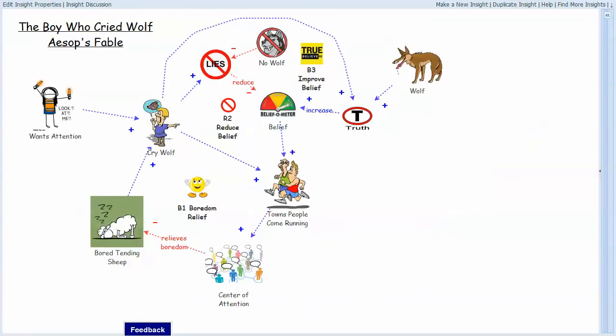And here is one that I implemented the other day, which is a causal loop diagram for Aesop's Fable, The Boy Who Cried Wolf, which starts out with a situation where the person is very bored tending sheep and wants attention, and the two of those interact to induce the person to cry wolf. Crying wolf encourages the townspeople to come running, and the person becomes the center of attention, which relieves the boredom.